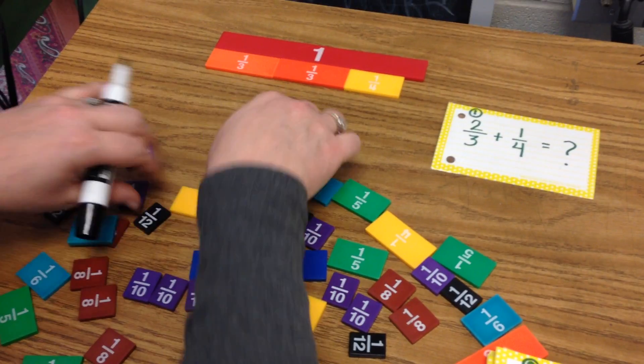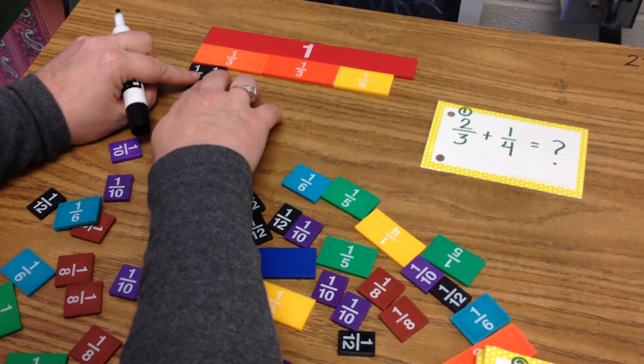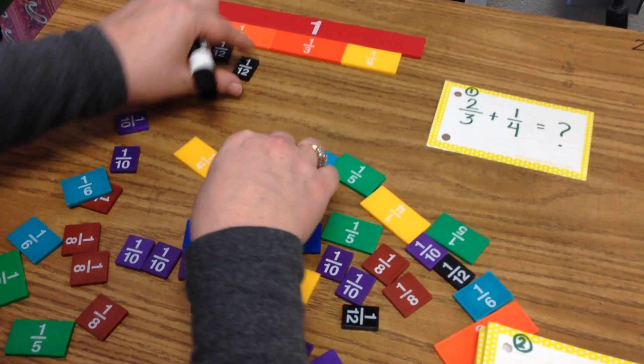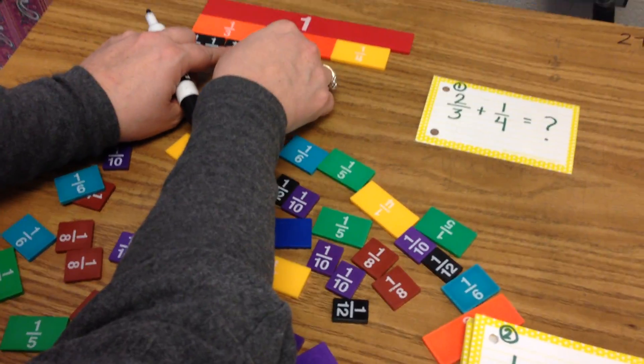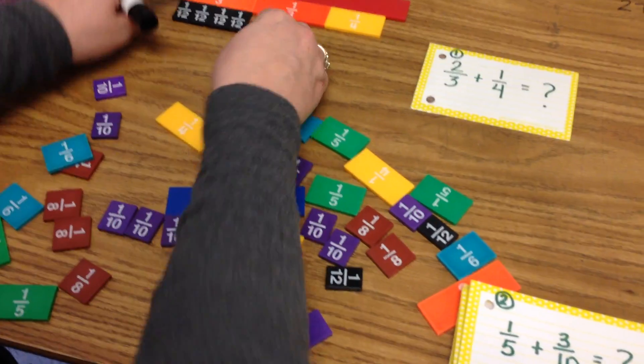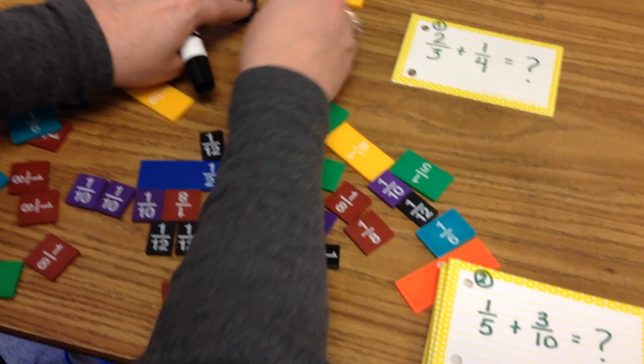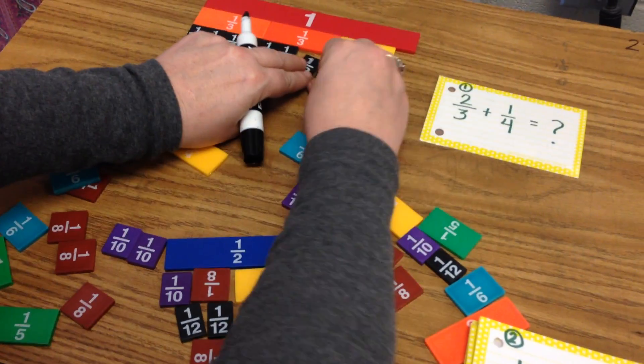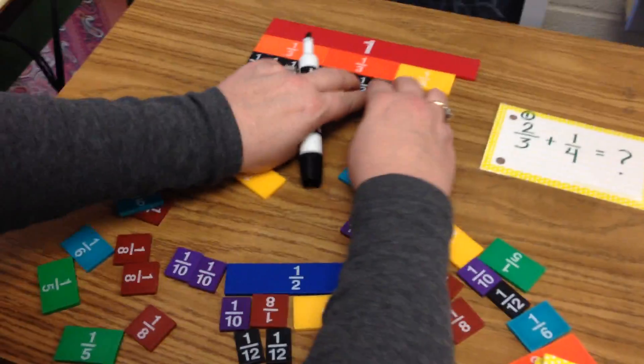So then what I will do is take my twelfths and line them up to make a bar that's going to be the same length. Right here I can see that one-third is equal to four twelfths. So I know I need four more right here. So that's eight twelfths.